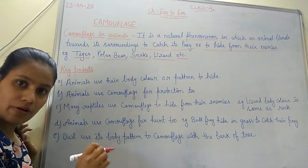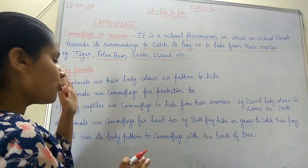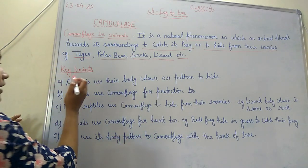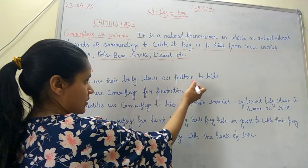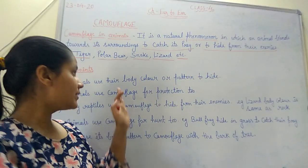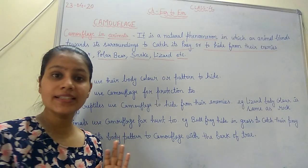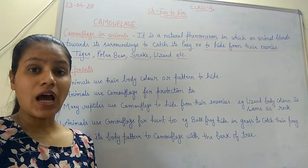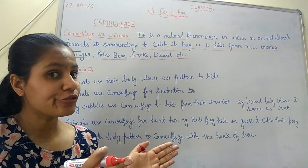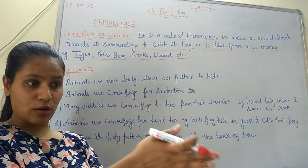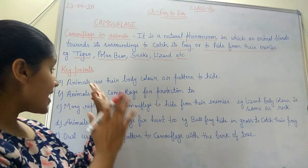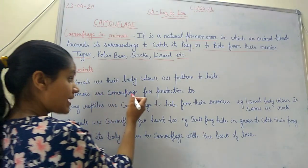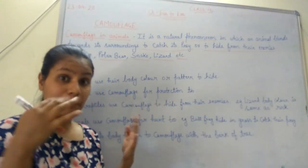There are some key points to help you understand camouflage. First, animals use their body color or pattern to hide. For example, the body pattern of an owl is the same as the bark of a tree, so it totally blends with the surrounding, which helps the owl hide from its enemies.